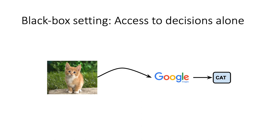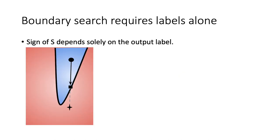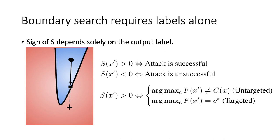Now we have an algorithm which assumes access to the gradients. We will modify this algorithm to the black box setting which has access to decisions alone. In fact, the first step boundary search only requires output labels. This is because each step of binary search only depends on the sign of S, and the sign of S is solely a function of the output label.